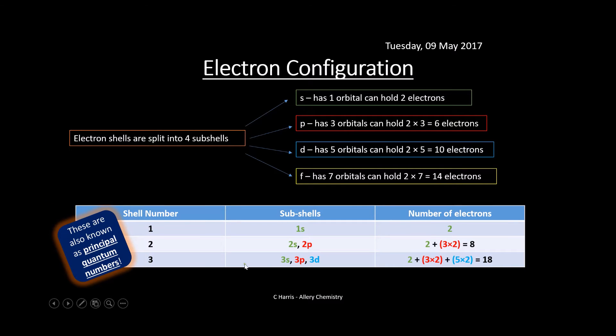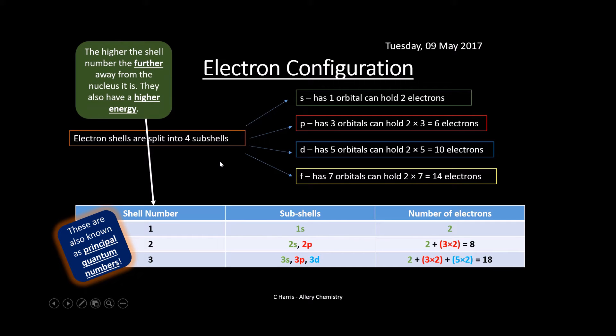These are also known by the fancy name principal quantum number, which is the shell number. Instead of shell number, you might see this written - it's just the shell number that matches these numbers in front. The higher the energy or the higher the shell number, the further away it is from the nucleus. These have much higher energy, and that's quite important when you're ionizing an atom, because the energy level it sits in is going to be important.